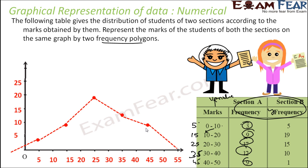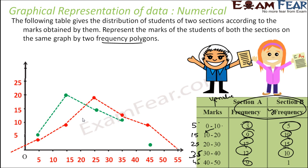Drawing section B in green: (5, 5), (15, 19), (25, 15), (35, 10), (45, 1). Let me join these points. So this is the frequency polygon for section B and this is for section A.